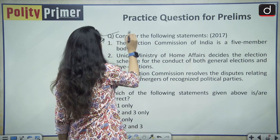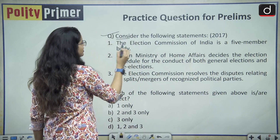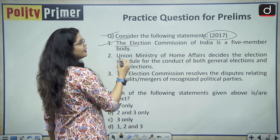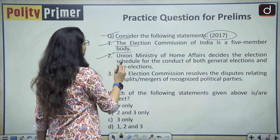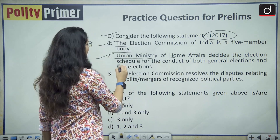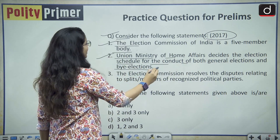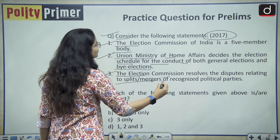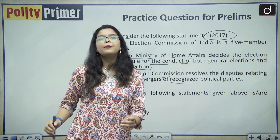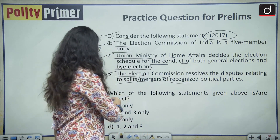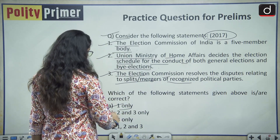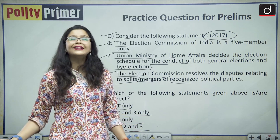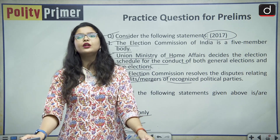For a Prelims practice question — this is a PYQ from 2017: Consider the following statements. Statement 1: The Election Commission of India is a five-member body. Statement 2: The Union Ministry of Home Affairs decides the election schedule for the conduct of both general elections and by-elections. Statement 3: The Election Commission resolves disputes relating to splits and mergers of recognized political parties. Options: A) 1 only, B) 2 and 3 only, C) 3 only, D) 1, 2 and 3. Kindly share the correct answer in the comment box below.